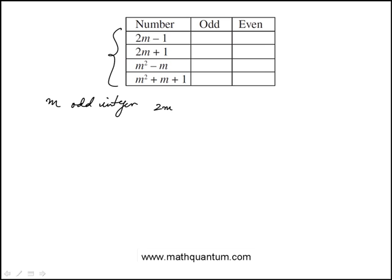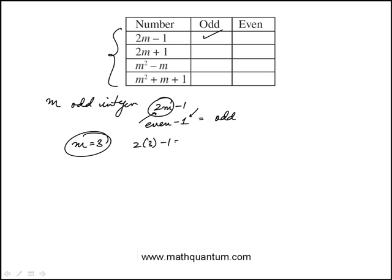Start with 2M minus 1. If M is odd, 2 times M — even times odd — would be even. So even minus 1, where 1 is odd, will be odd. So this will be odd. You can also do it with numbers. For example, if M is 3, this would be 2 times 3 minus 1, which is 5. Using numbers would be easier actually, but I want to emphasize the more general way of doing it too.